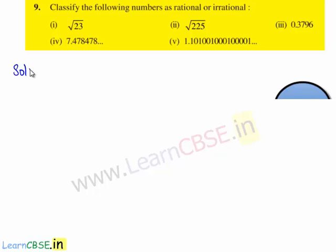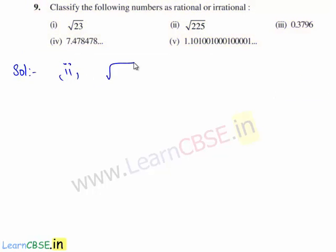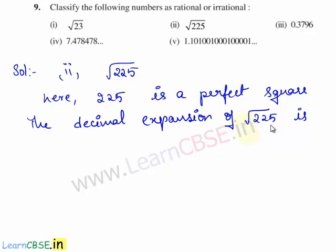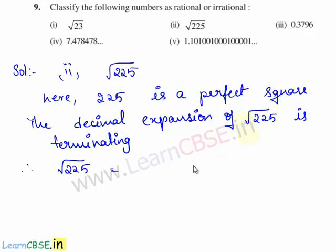Now let us move on to the second bit. We need to classify whether square root of 225 is rational or irrational. Here 225 is a perfect square, so the decimal expansion of √225 is terminating. Let us find the value of √225 using the long division method.